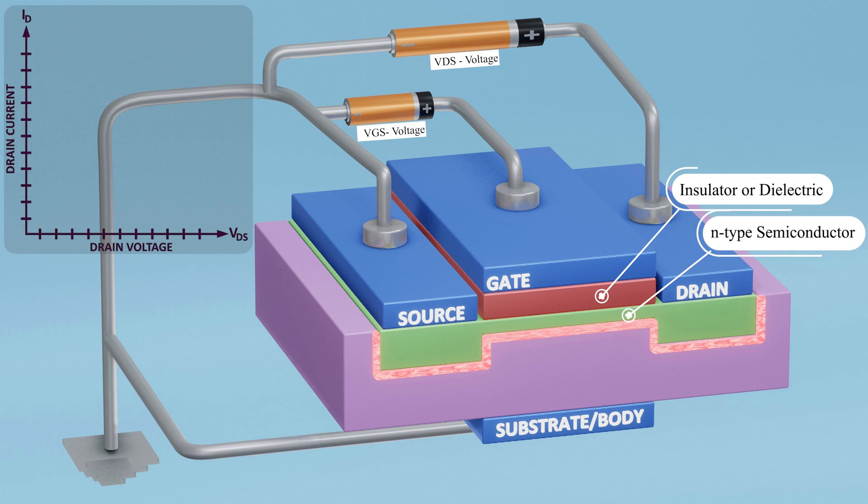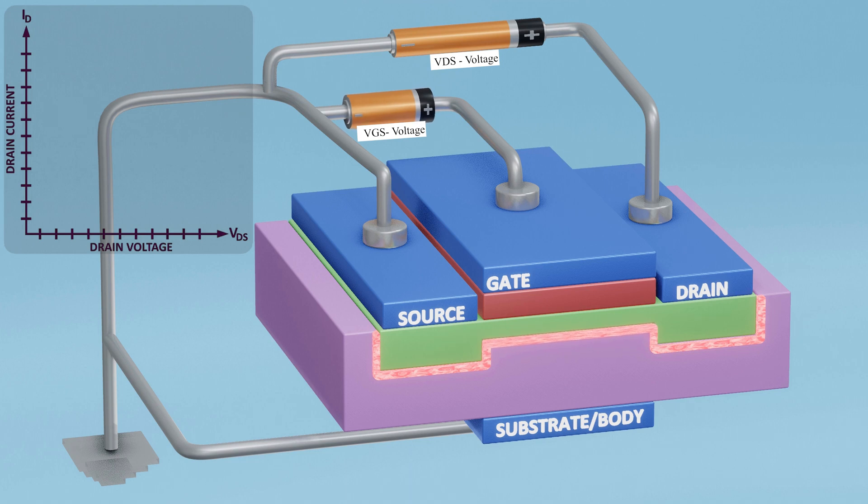This channel allows electrons to move from the source to the drain. By changing the gate voltage, the thickness of the channel can be controlled, and the voltage at which the channel is formed is called the threshold voltage.